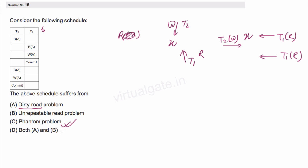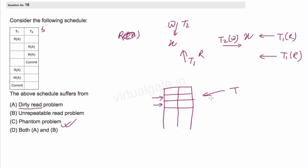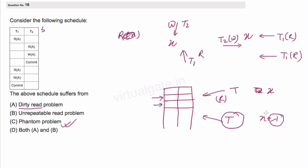The next one is phantom phenomena. Phantom phenomena is when a transaction T1 does a select operation over a set of records and reads x number of tuples. Then when the same transaction performs a read again, the number of tuples is x plus some additional amount. The same transaction finds some phantom tuples — tuples which were not previously there but have newly arrived. This is a problem where we get new tuples when performing two reads over the same variable. That is called the phantom problem.